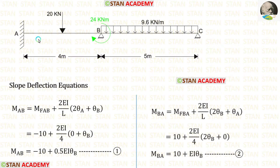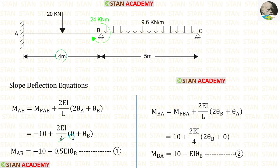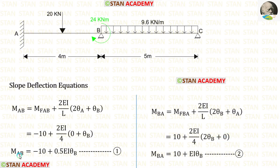Now let us make the slope deflection equations, first for span AB. In the equations, let us first apply the fixed end moments. Length of AB is 4 meters. At point A there is a fixed support, so there will be no slope — theta A will be 0. Finally, in span AB we have made two equations.